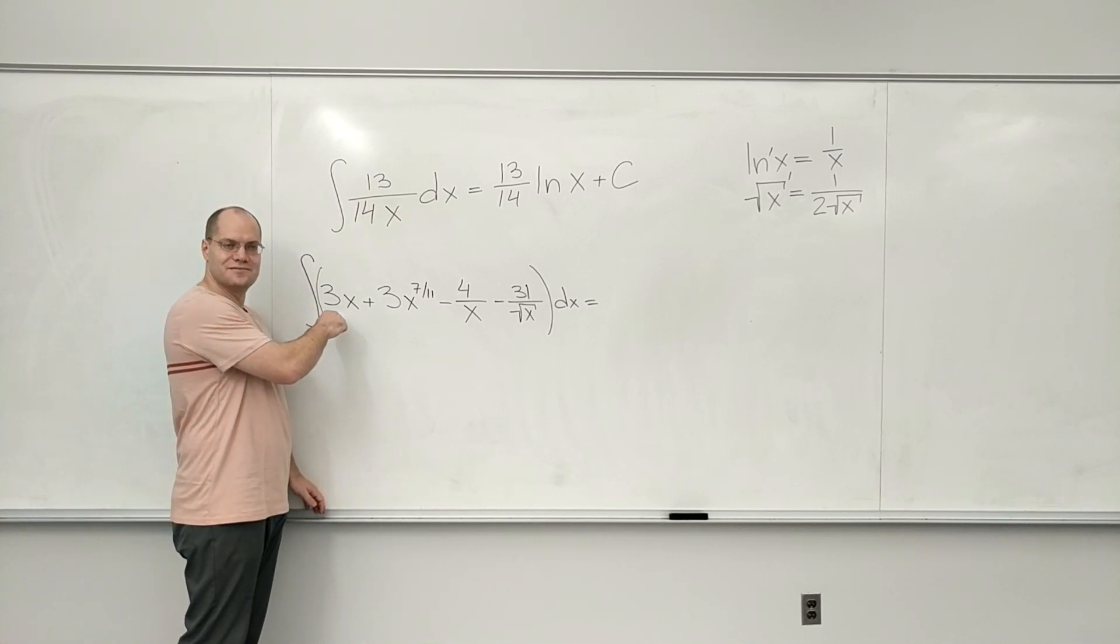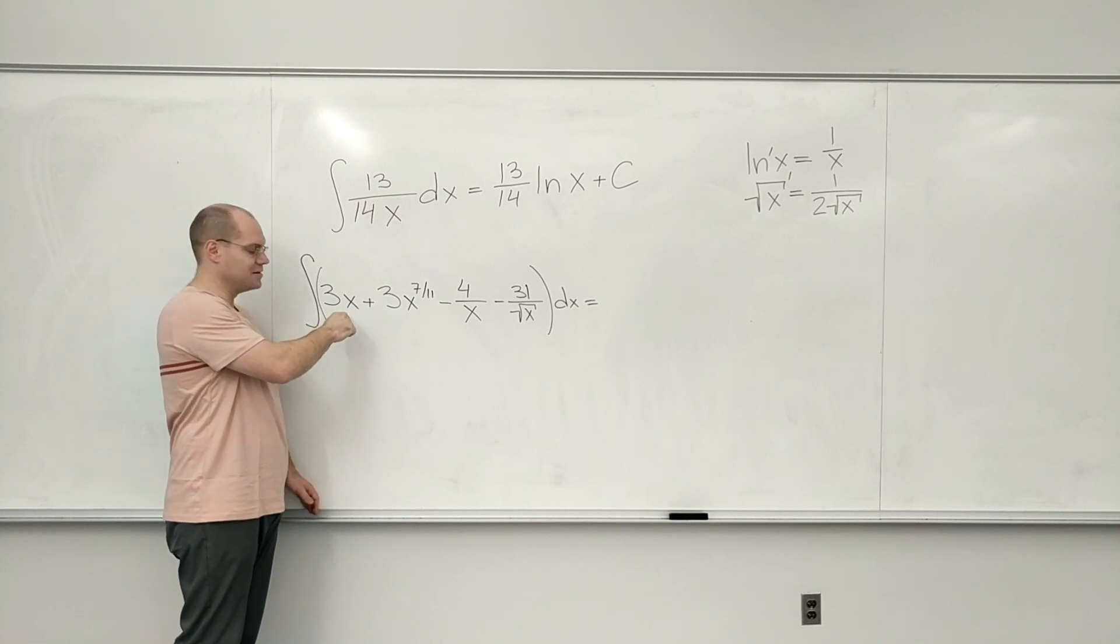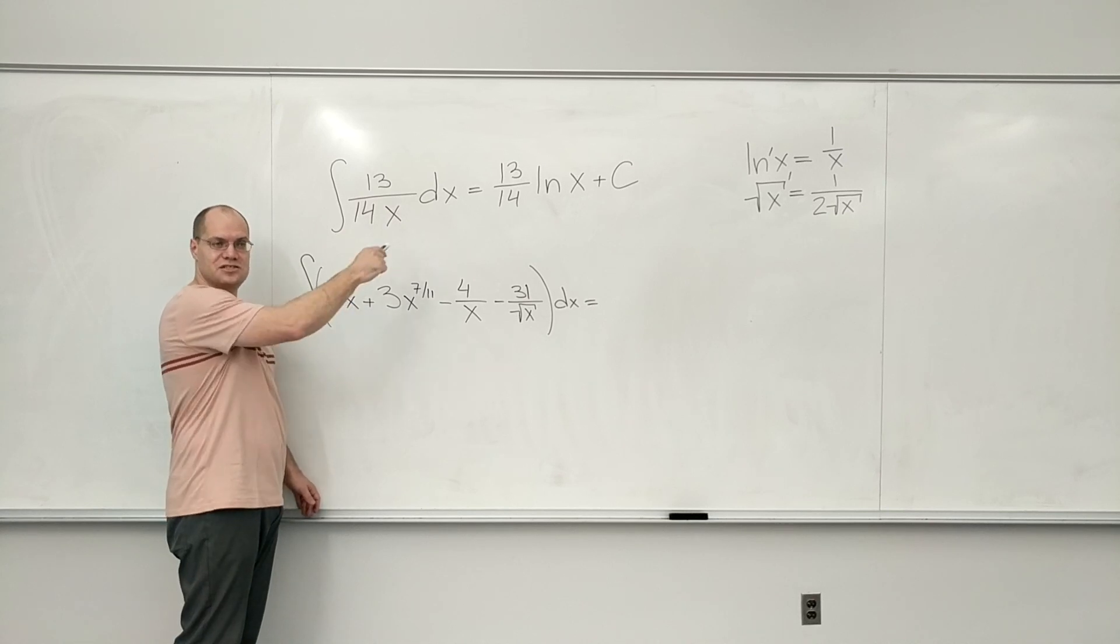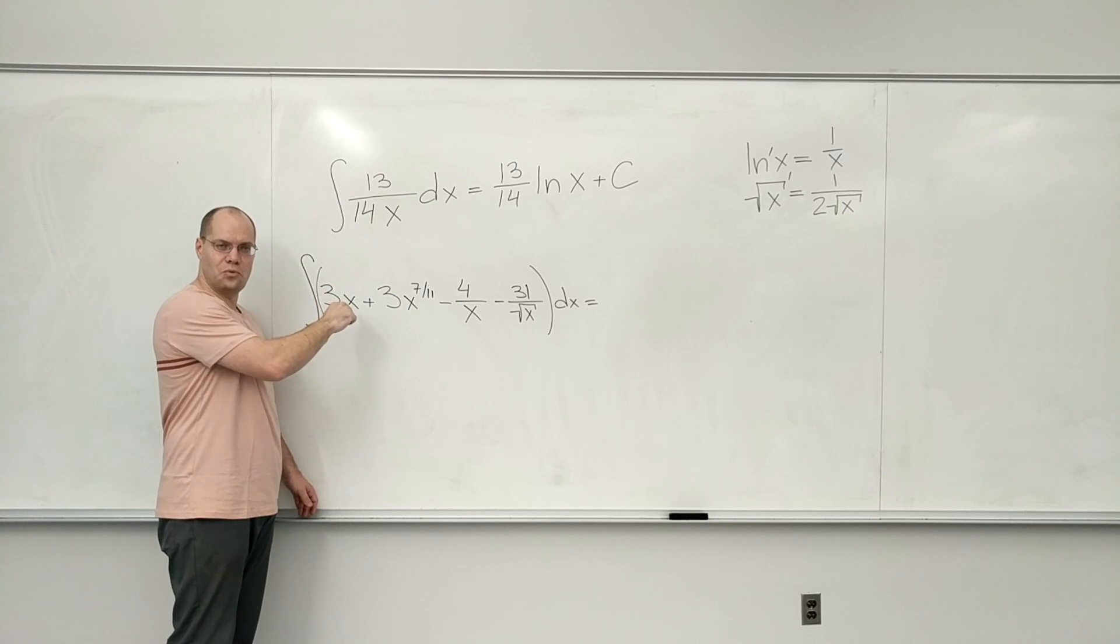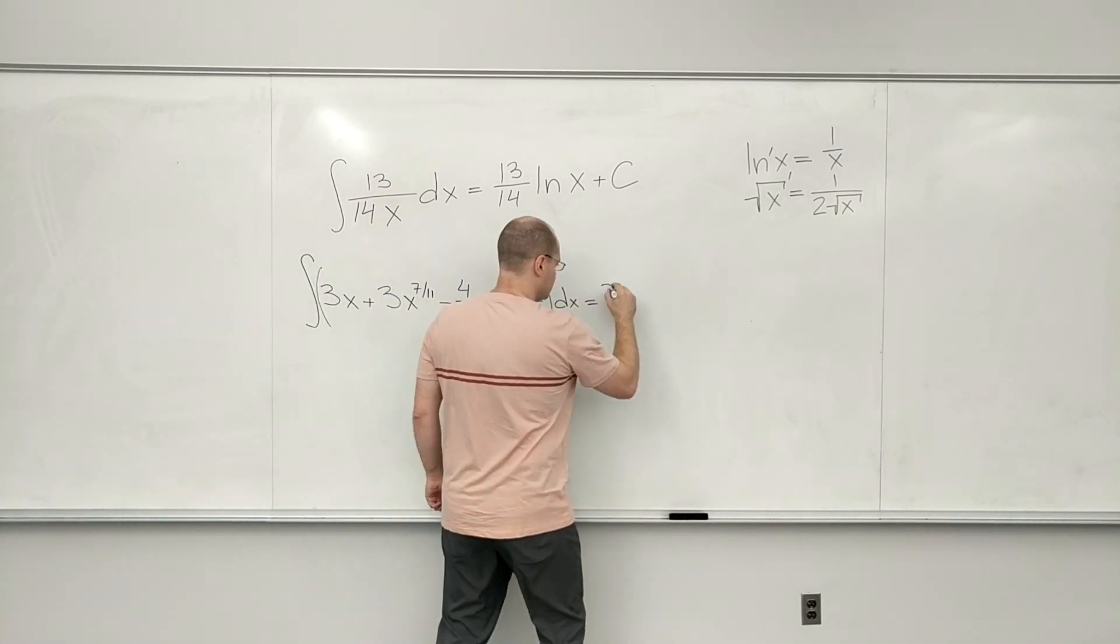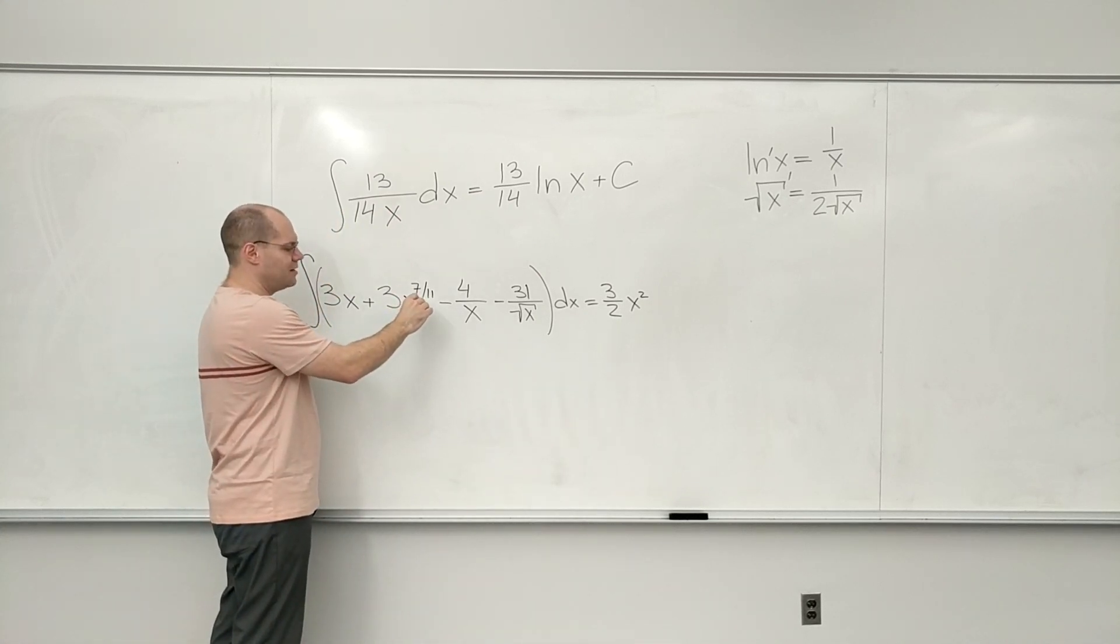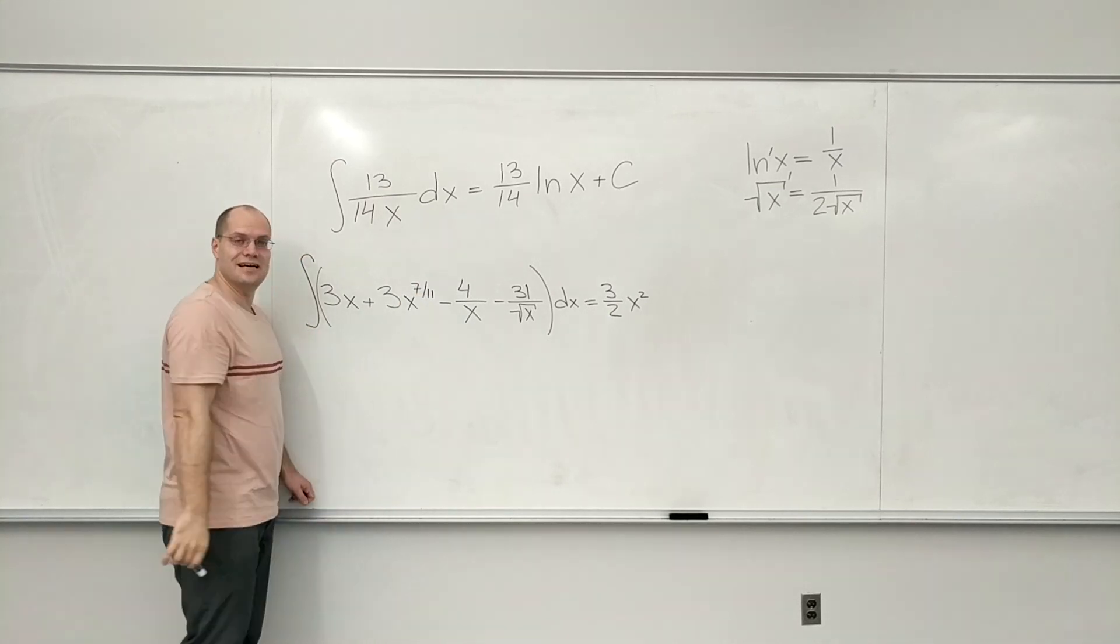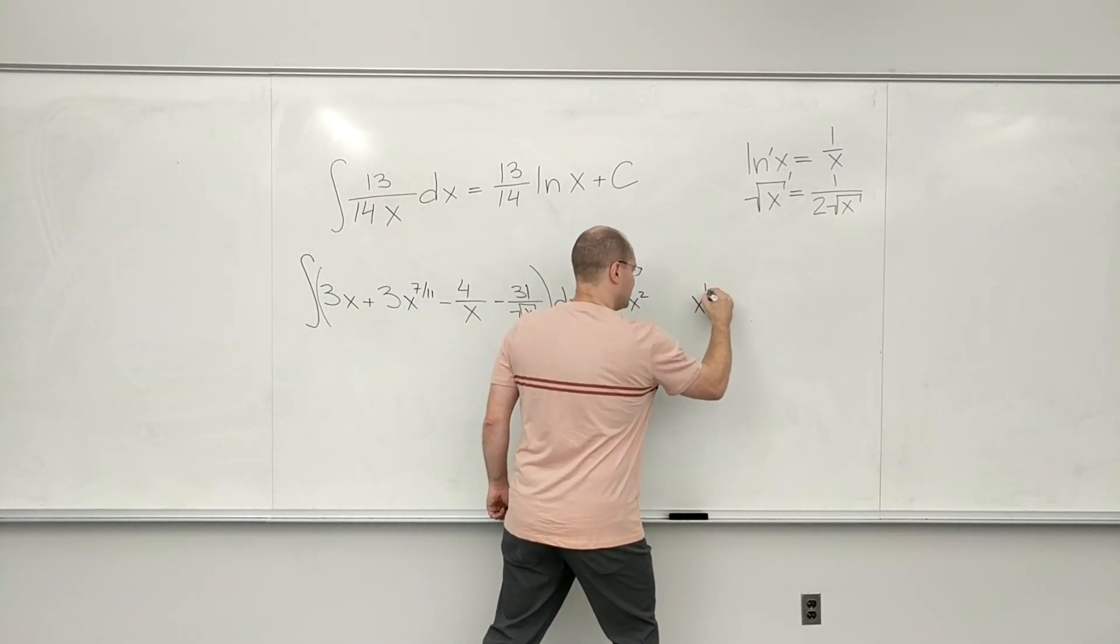Alright, do you want me to rattle through them? Let me do that and then write them all down. I know that this came from x squared, but x squared would give me an extra factor of 2, which is not here. So that's a half, so this will be 3 halves x squared. Next one. 7 over 11 came from 18 over 11. Maybe I'll write that part down. Now, x to the 18 over 11.